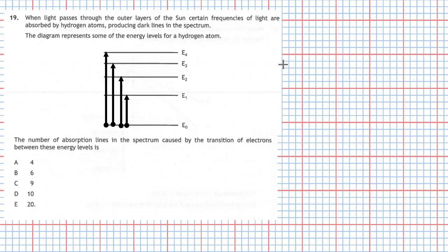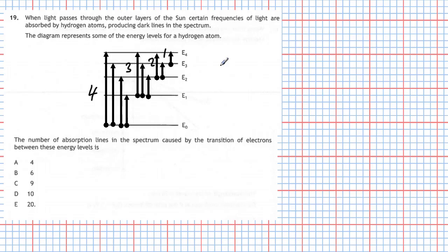The electron could also be sitting on energy level E1 — it could be absorbed up to E4, E3, or E2 — that's three more. If sitting at E2, it can go to E4 or E3 — two more. And finally if the electron is at E3, it can only be absorbed up to E4 — one more. So in total: four plus three plus two plus one gives ten dark lines in the spectrum, where photons have been removed. Ten lines is the answer.